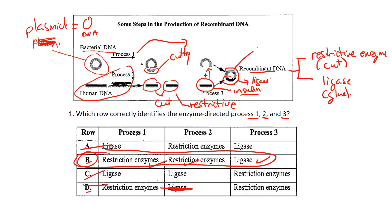What they do then is take that bacteria, put it into a petri dish, and bacteria do what they do best — multiply. When they multiply, they're also multiplying the gene that produces insulin. We've been doing this since 1983. We used to get insulin for diabetics from pigs, but there was always a chance of rejection because the body didn't recognize the species of insulin.